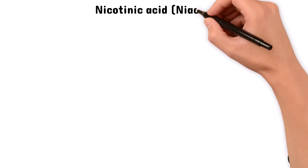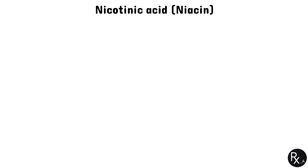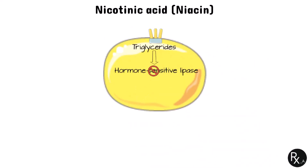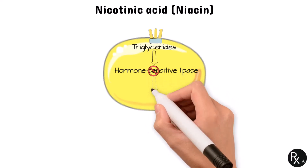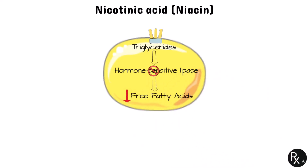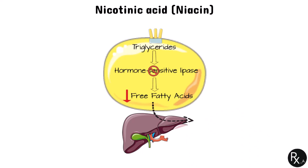Let's now discuss another class of medications that lower cholesterol, which includes just one agent: nicotinic acid, commonly referred to as niacin. Unlike statins, niacin acts on adipose tissue by inhibiting hormone-sensitive lipase, an enzyme that breaks down triglycerides into free fatty acids. Normally, the liver utilizes free fatty acids to make its own triglycerides, which become an important component of VLDL. By lowering the amount of free fatty acids that can be transported to the liver, niacin effectively lowers hepatic VLDL synthesis, which in turn lowers LDL levels. Additionally, through a few different methods that are now under investigation, niacin increases HDL levels.